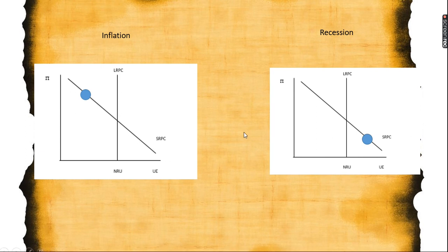On the Phillips Curve, inflation is shown by a point to the left of the long run Phillips Curve. A recession is shown by a point to the right of the long run Phillips Curve.